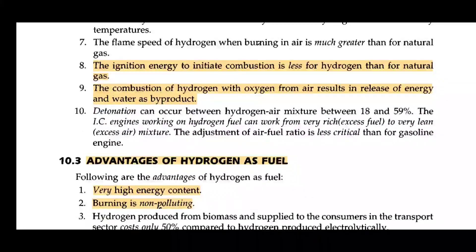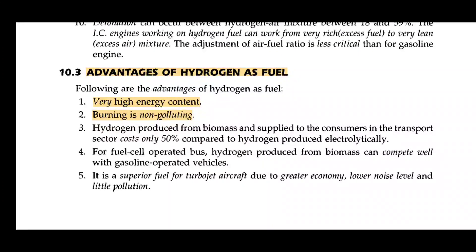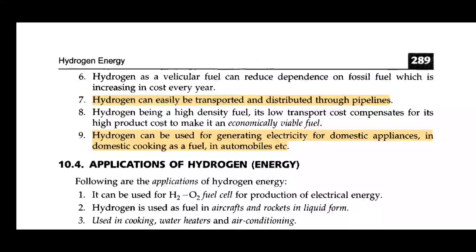The combustion of hydrogen with oxygen from air results in the release of energy and water as a byproduct. That is a big advantage — water is not a waste material. The main advantage is the very high energy content. Burning is non-polluting. Hydrogen can be easily transported and distributed through pipelines. Hydrogen can be used for generating electricity, for domestic appliances, domestic cooking as fuel, and in automobiles.